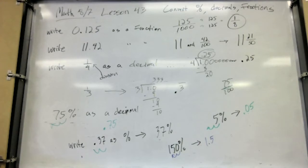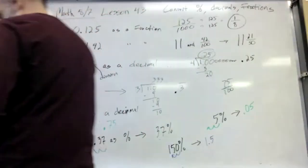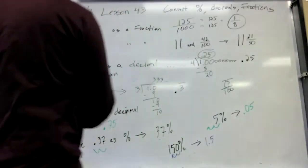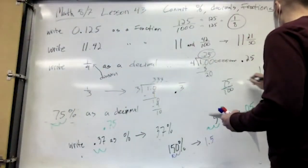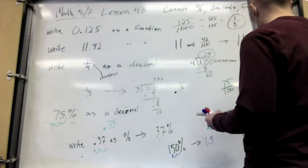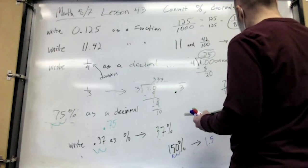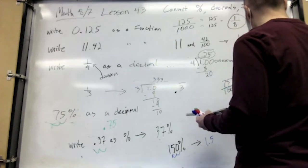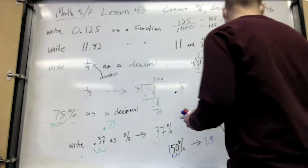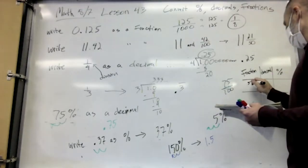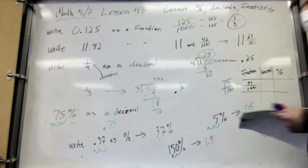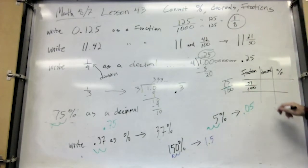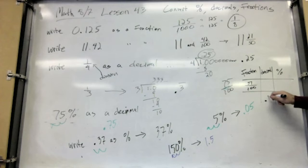Your homework is going to look like a little chart with fraction, decimal, and percent columns. You're going to have to convert to a decimal and a percent, and fill in the blanks.